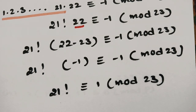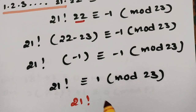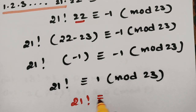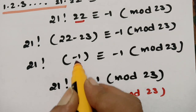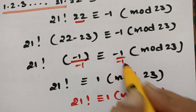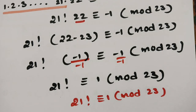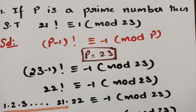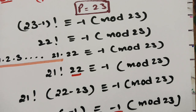So this is what was asked to show: if P is a prime number, then 21! ≡ 1 (mod 23). Dividing both sides by −1, we get +1. This is the first question, and it is very important.